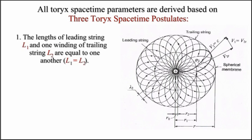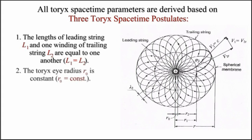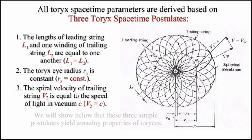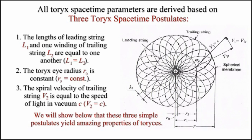First, the lengths of leading string L1 and one winding of trailing string L2 are equal to one another. Second, the toreses trailing spacetime radius R0 is constant. And third, the spiral velocity of trailing string V2 is equal to the speed of light in vacuum C. These three simple postulates yield amazing properties of toreses.